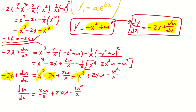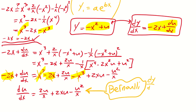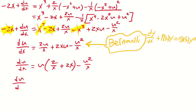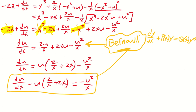If you look closely, this is in fact a Bernoulli differential equation — of the form dy/dx plus p(x)·y equals q(x)·y^n. After factoring and rearranging algebraically: du/dx minus u times (2 over x plus 2x) equals minus u squared over x, which now clearly has the Bernoulli form.